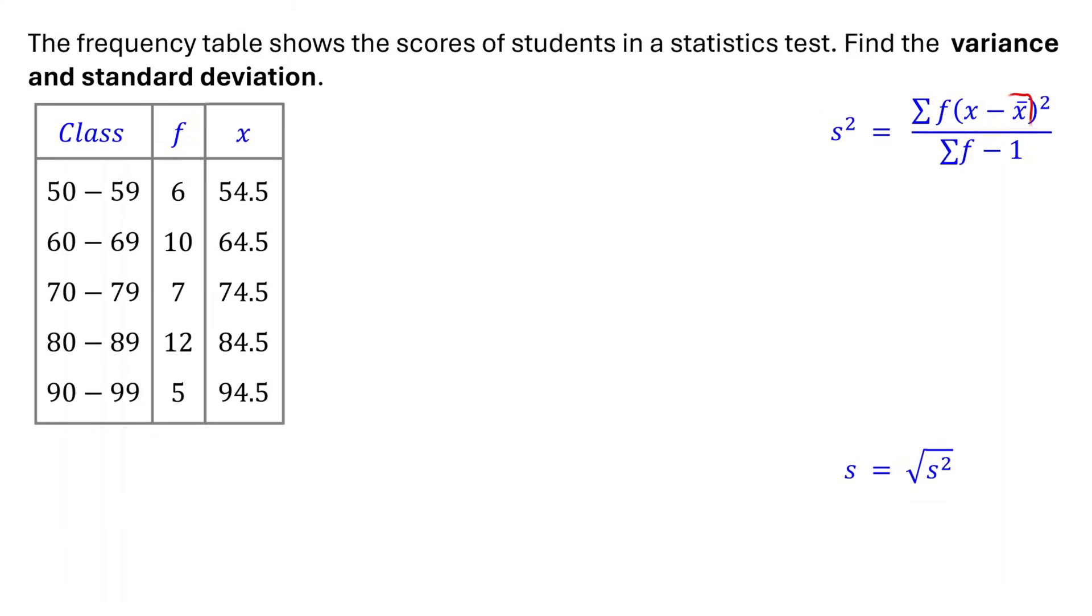The next step is to find the mean of the grouped data, which is calculated using this formula. First, multiply each midpoint by the corresponding frequency. For the first class, 6 times 54.5 equals 327. For the second class, 10 times 64.5 equals 645. Do the same for the remaining classes. Now add up all the products of midpoints and frequencies. When we sum these values, we get 2,980.